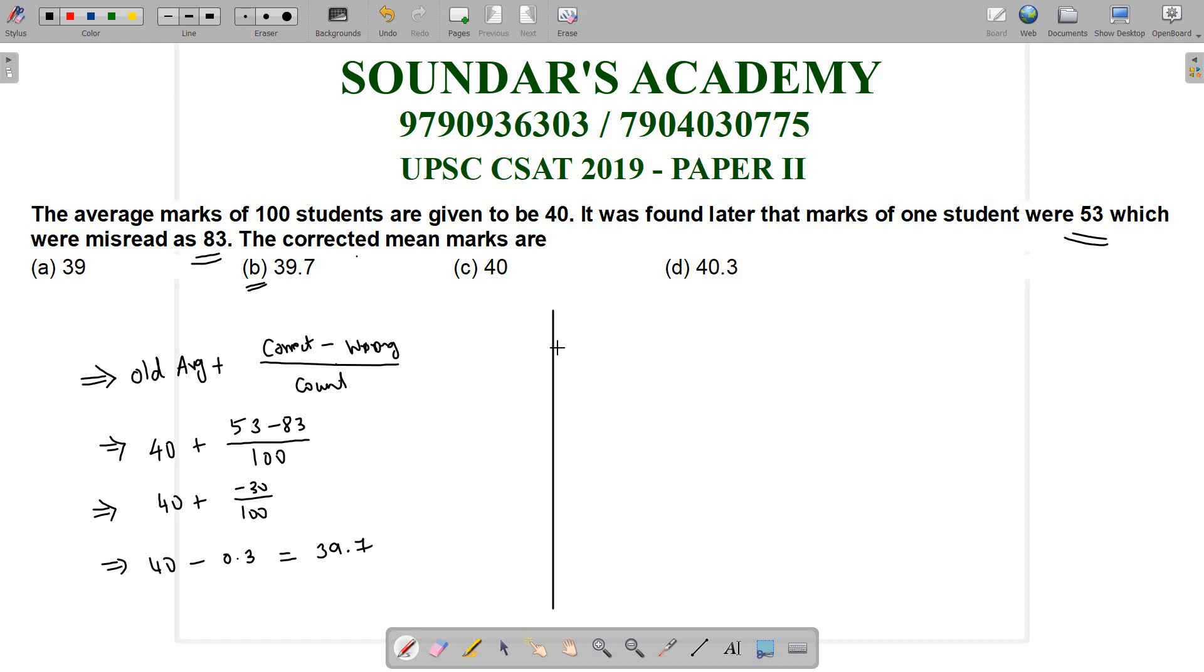One student's mark is 53, but we entered 83. Actually we should enter 53. Now that we enter 53, this is the correct part for our average variable.